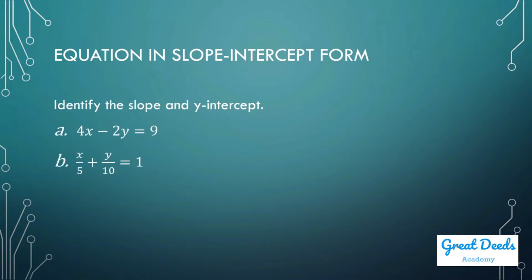Identify the slope and the y-intercept. From letter A: 4x minus 2y equals 9. The slope is not easily visible right away, so we write it in slope-intercept form. After transposition, y equals 2x minus 9/2. The slope is 2 and the y-intercept is negative 9 over 2.